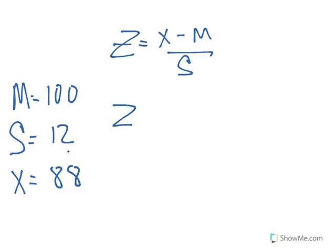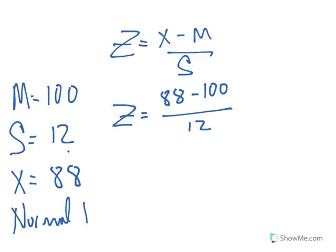So the z score is equal to x, 88 minus the mean divided by the standard deviation. And obviously you would need to know if you're going to use this to figure out the percentile, then you need to know that this is a normal distribution. If it's not a normal distribution, you can still calculate a standard score, but it just doesn't mean a whole lot. When it's normally distributed, it means a whole lot more. So let's concentrate on it being normally distributed.